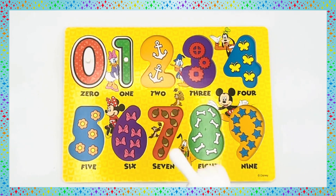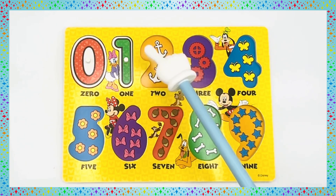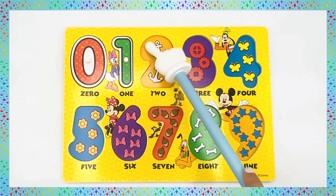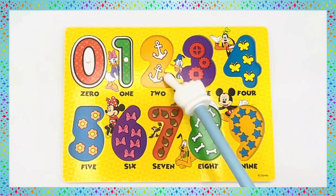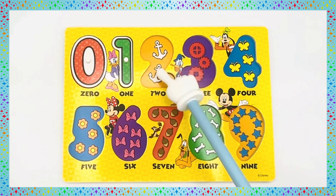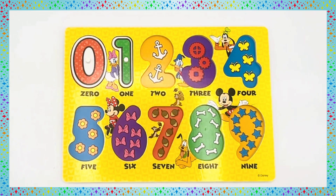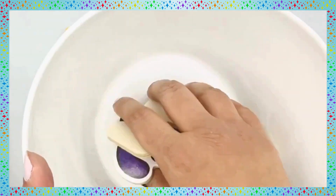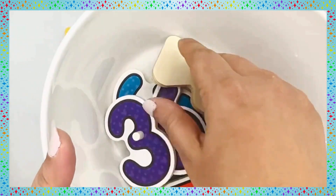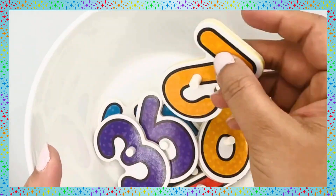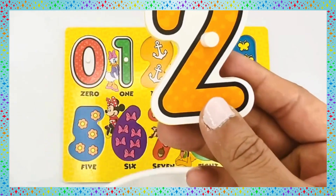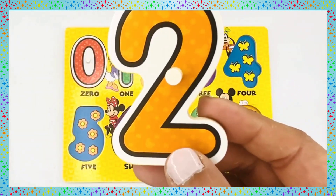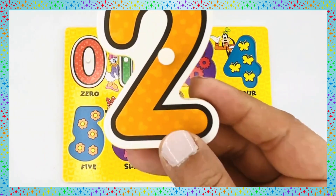How many anchors do you see? 1, 2. Let's find our number 2. Here it is, number 2.